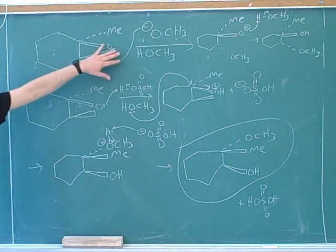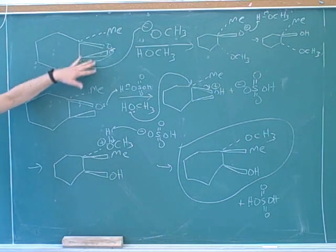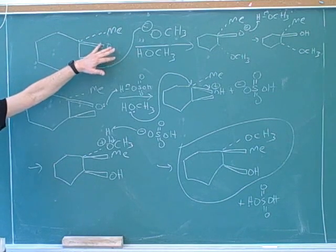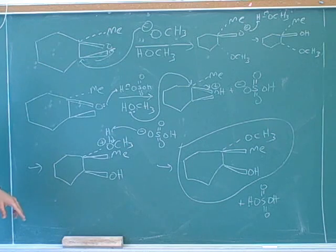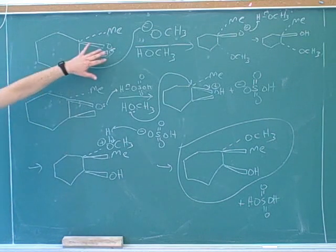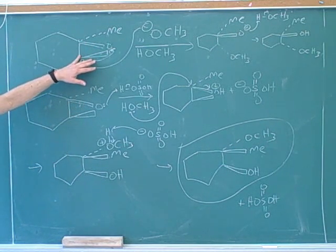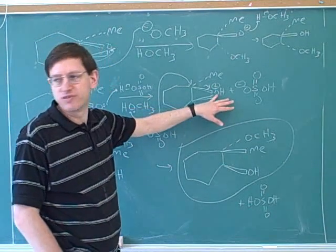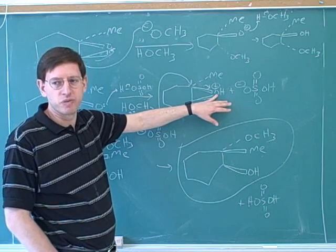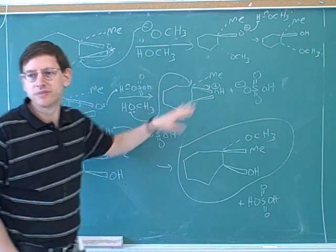On the other hand, if you're attacking a neutral epoxide, there is no positive charge, so there is no carbocation character argument. There's no carbocation character because there's no positive charge. So now we should attack the less sterically hindered carbon. Here we were attacking a neutral epoxide, so we attacked the less sterically hindered, less substituted carbon. But when attacking an epoxide with a positive charge, we want to attack the carbon with more carbocation character — the more substituted carbon.